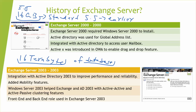Exchange Server 2000 was another major version, representing an improvement from earlier versions. You had to install Exchange Server 2000 on Windows Server 2000 — that's an important thing to remember. This version of Exchange Server 2000 was released to the public on November 29th, 2000.